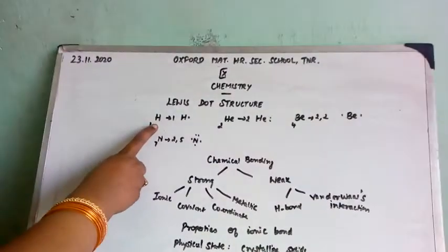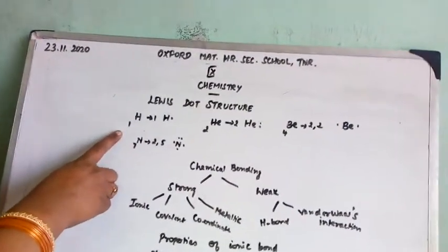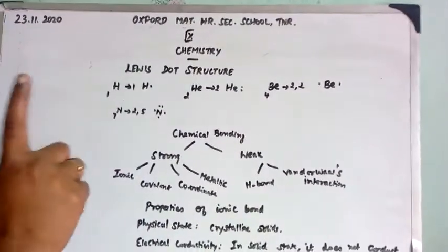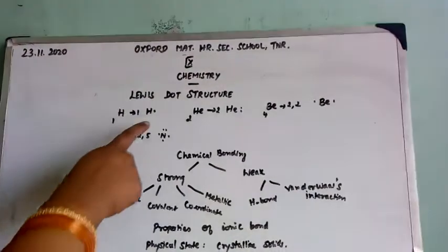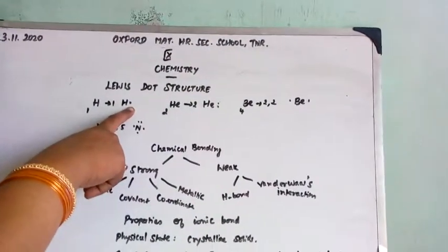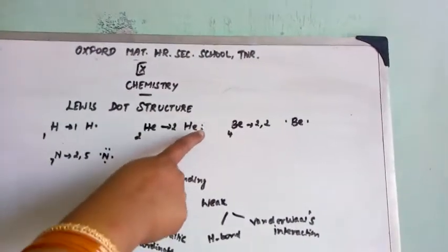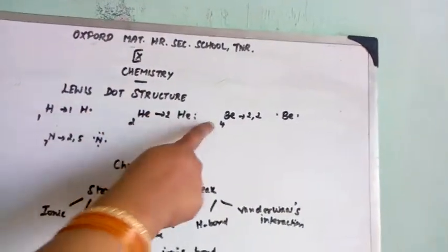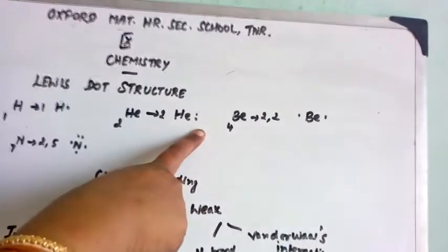For hydrogen, atomic number is 1. So electron distribution also only 1. Valence electron is 1. That is why we have represented like this. For 2, it is represented like this. Here it is unpaired electron. This is paired electron. For beryllium 4, how we can write this 4? 2, 2.